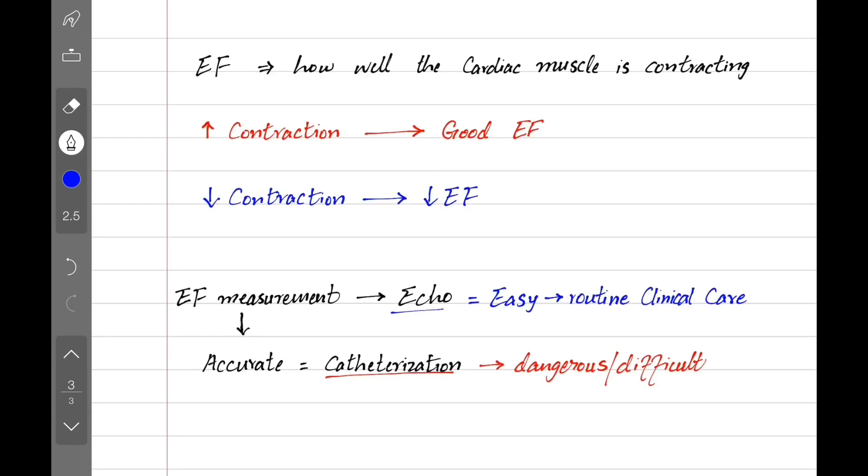We know from these tests that in normal healthy people, the normal range of ejection fraction is between 55% to 70%. Some conditions can change this and give us increased ejection fraction.